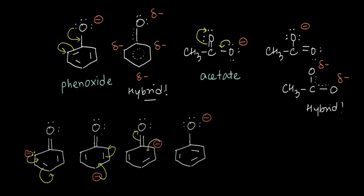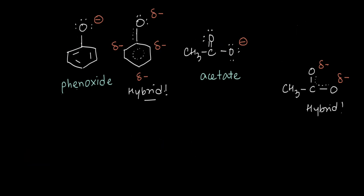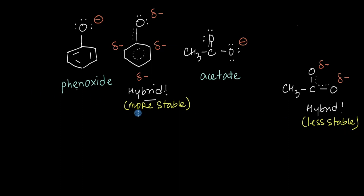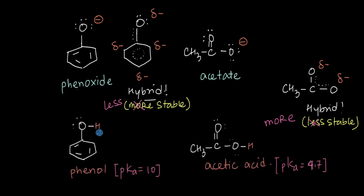So therefore the phenoxide ion should be more stable while the acetate ion should be less stable. However, it turns out that this is actually not true — the phenoxide ion is in fact less stable, much less stable compared to the acetate ion. One of the ways we can figure out which one is more stable is by looking at the acidic strength of their corresponding acids: phenol and acetic acid.